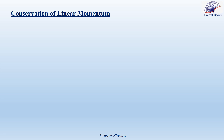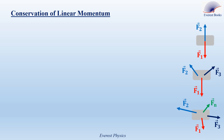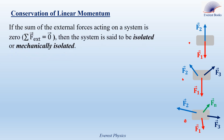Conservation of linear momentum. If a system is subjected to more than one external force — as in the figures shown: figure one has two external forces, figure two has three external forces, and figure three has n external forces — if the sum of the external forces acting on a system is zero, then the system is said to be isolated or mechanically isolated.